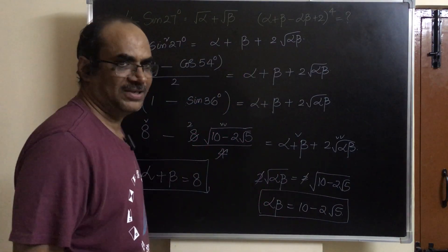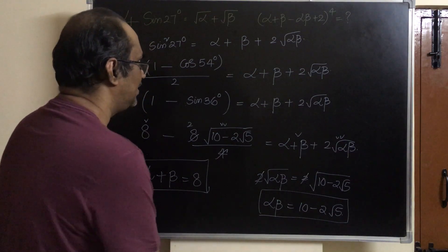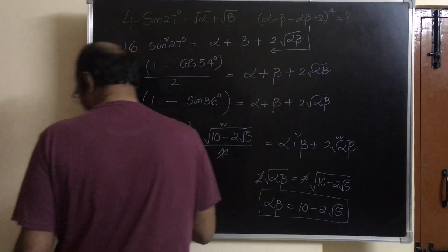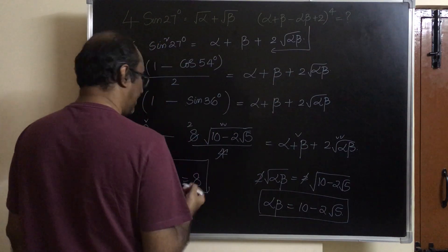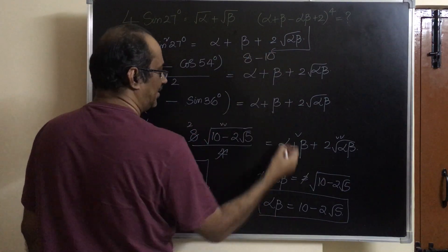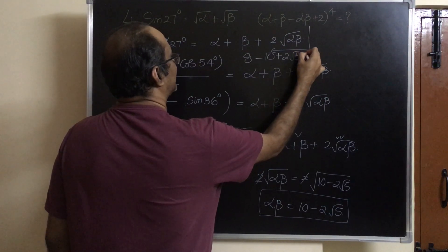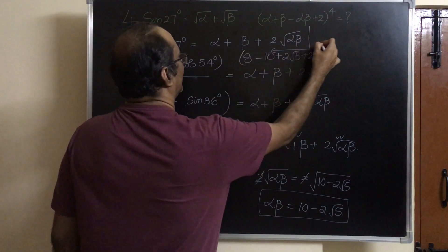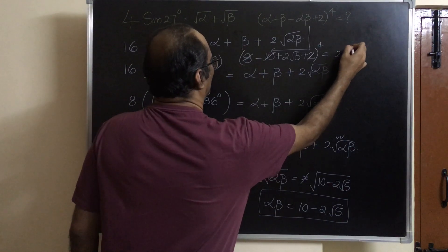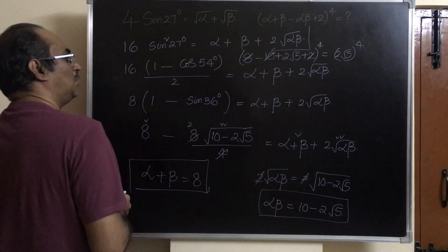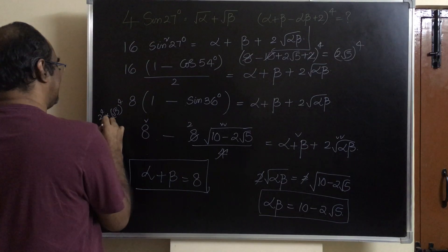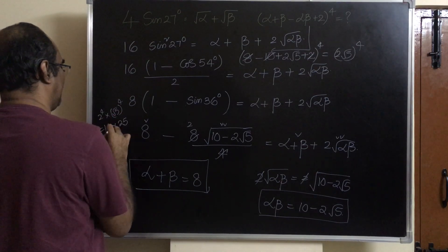Now that we have alpha plus beta equals 8 and alpha beta equals 10 minus 2 root 5, we can substitute what we need. Alpha plus beta minus alpha beta plus 2 becomes 8 minus 10 minus 2 root 5, plus 2, whole to the power of 4. That is 8 plus 2 minus 10, which cancels, leaving 2 root 5 whole to the power of 4. That is 2 to the power of 4 times root 5 to the power of 4, which is 16 into 25, equals 400.